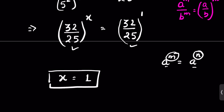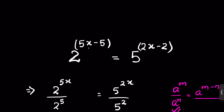We can verify the answer. With x equal to 1: 5 times 1 is 5, and 5 minus 5 is 0, giving 2 raised to the power 0, which equals 1. On the right side, 2 times 1 minus 2 is also 0, giving 5 raised to the power 0, which also equals 1. LHS equals RHS, confirming x equals 1.